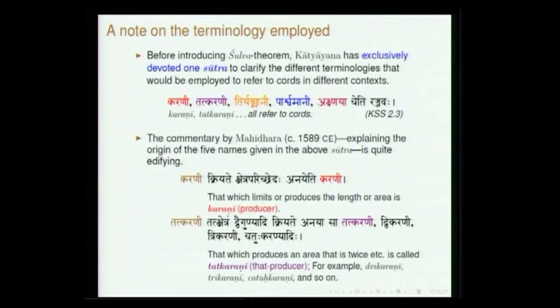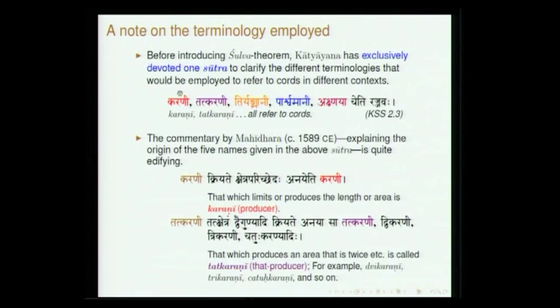Before proceeding further, I will introduce certain terms which frequently occur in Sulva Sutras with slightly different connotations in different contexts, so that if you read the Sulva Sutras later these terms become clear. The term Karani has been used in different senses in different contexts. Taking a sutra from Katyayana Sulva Sutra: Karani, Tathkarani, Tiryangmani, Parishwamani, Akshanaya — Rajyahu means cord. All that the sutra says is these are five names assigned to the cord used in different contexts.